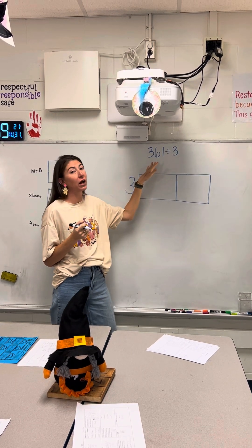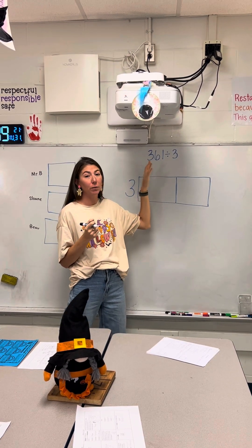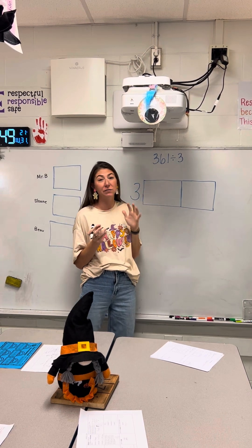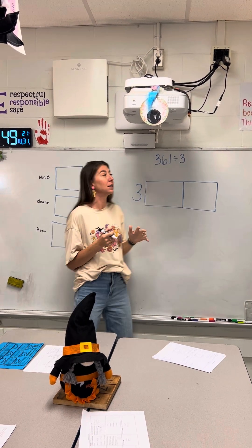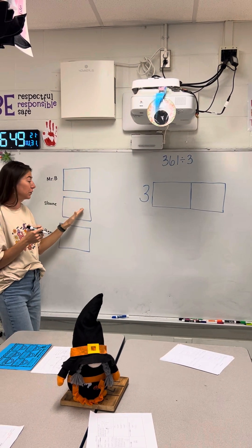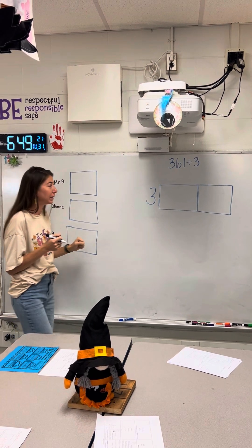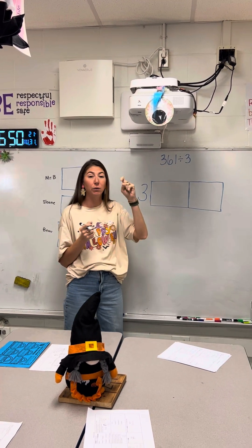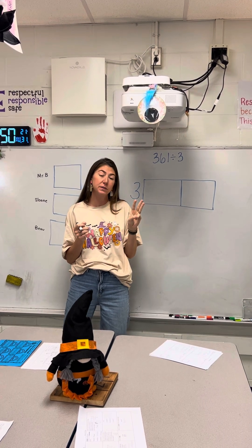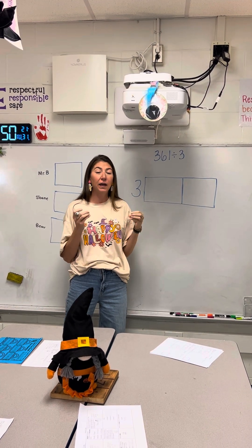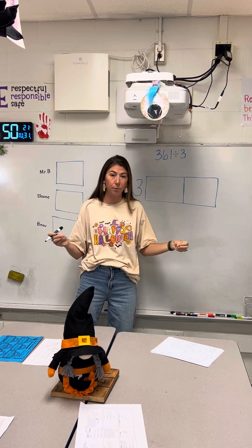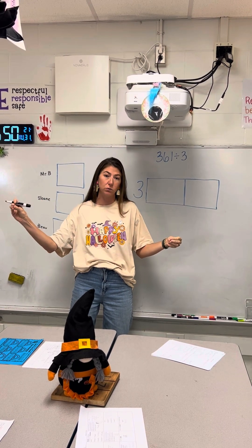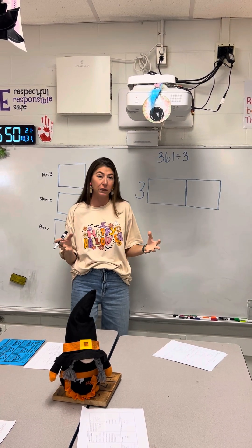So say we have 361 pieces of candy and the Brzezinski family really wants to divide it amongst Mr. B, Sloan, and Bo. So we have 361 and we want to break it into three different groups. The area model shows that representation of breaking it into the individual groups, which makes it really neat.